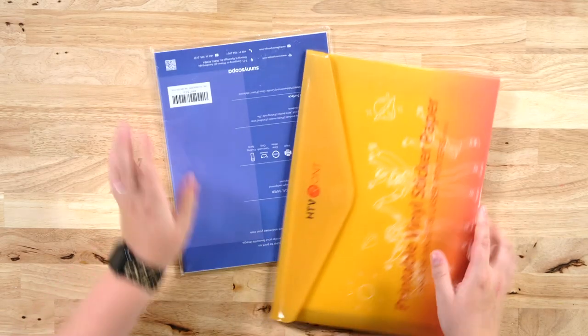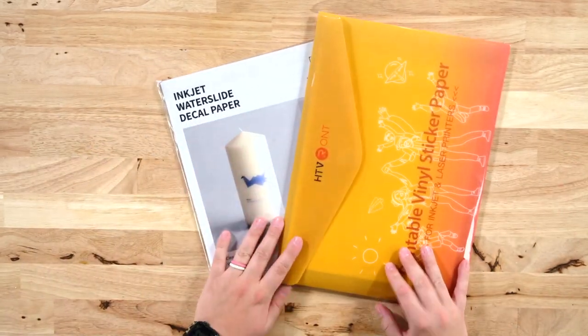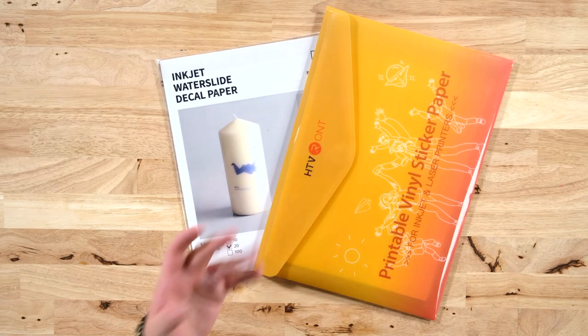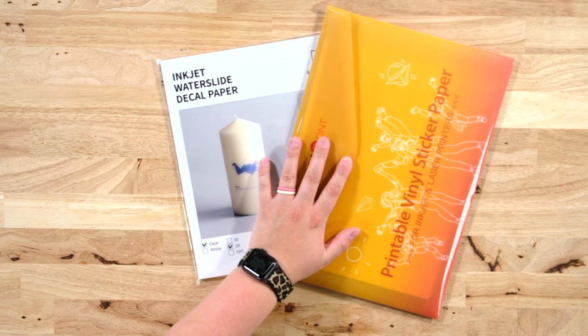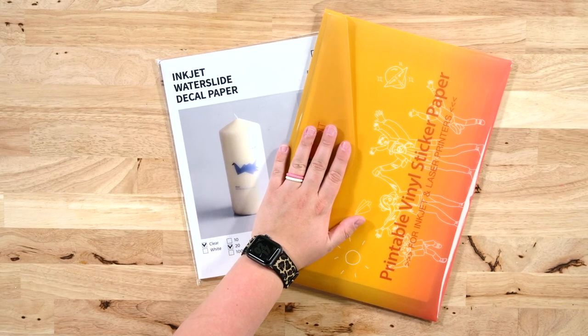Next up is a couple of paper products. This is not even close to all the paper products that we love. There's a 120 pound cardstock that we can't live without. There is a printable HTV from new fun that we love.